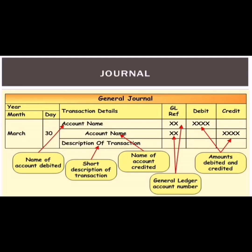Next to the date column is the transaction detail column. This column explains the name of the account being debited and the name of the account being credited. After the debit and credit accounts, there is a third line called the narration line, which is a short description of the particular transaction. After that, there is a ledger folio column, followed by a debit amount column and a credit amount column.